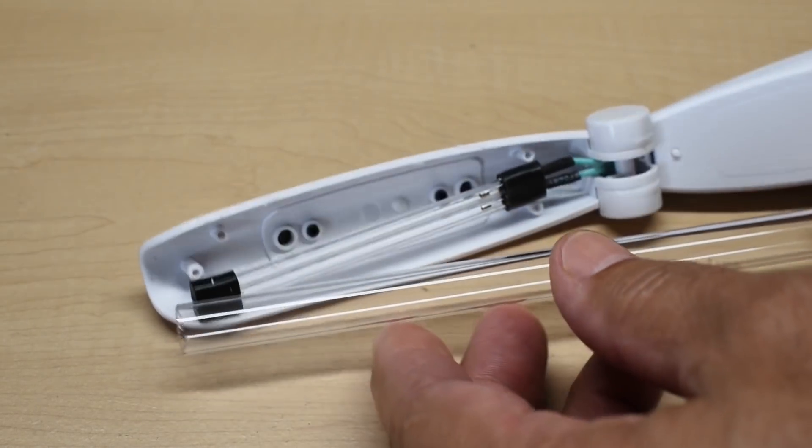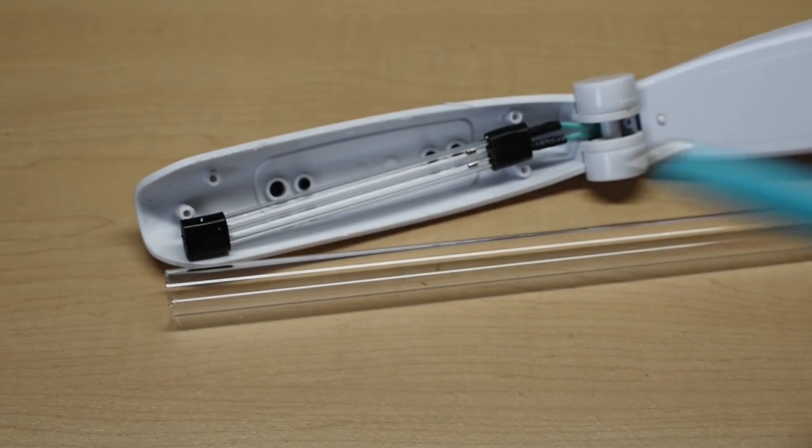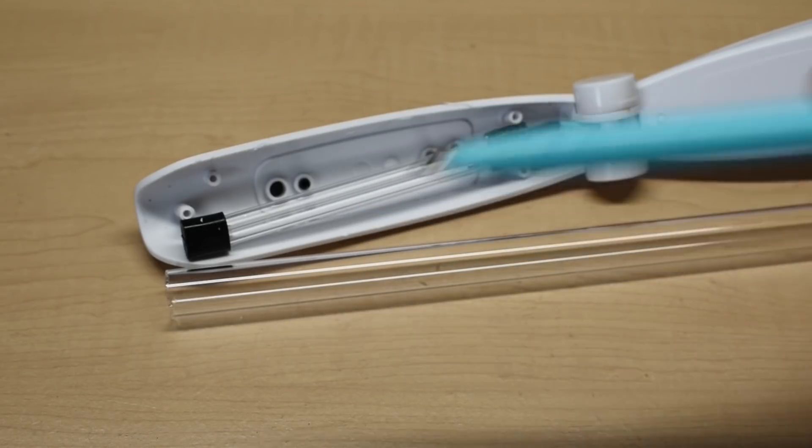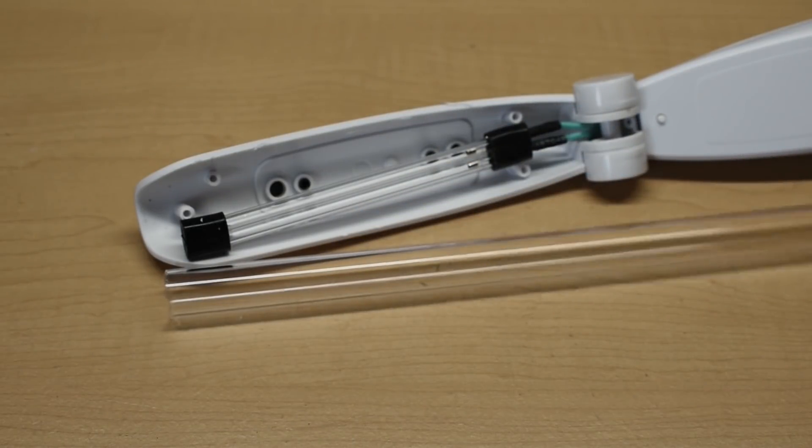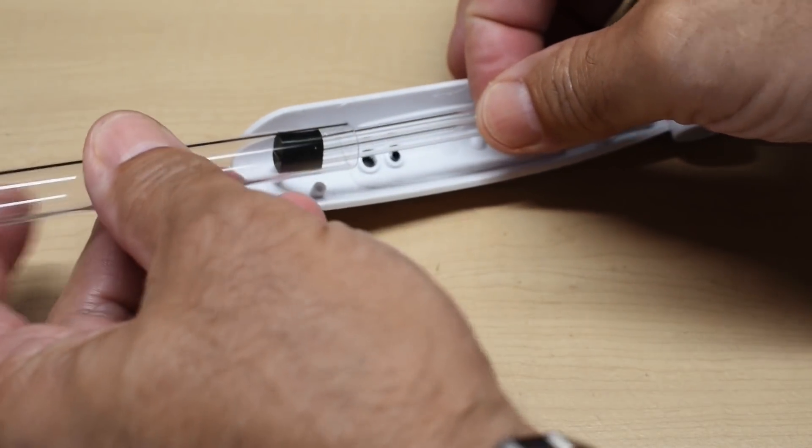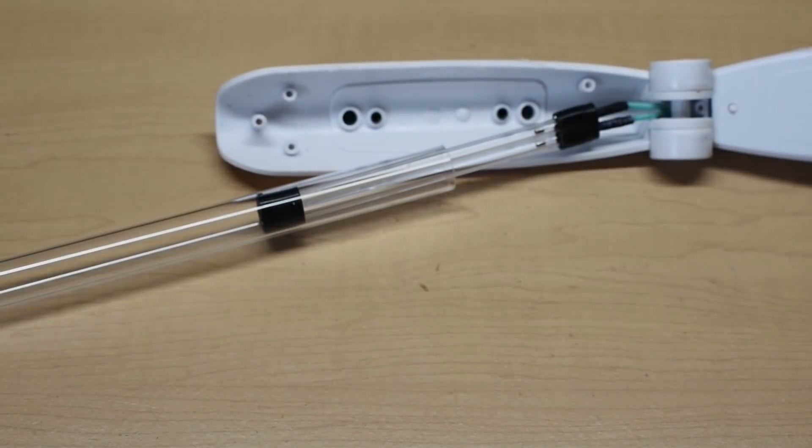Fused quartz will allow the great majority, probably 80 to 90 percent of the UVC light, to pass through this glass envelope into the water. Now just to show you how nicely this slides over the tube, look at this, I mean this could not be made any better for this project.